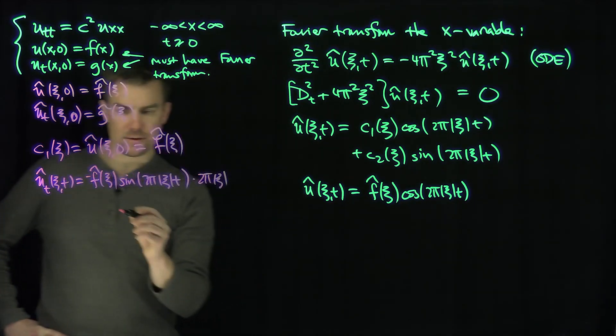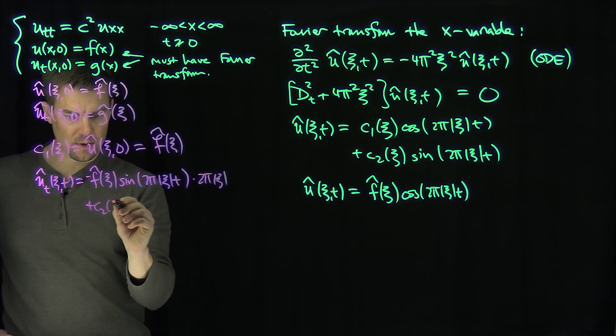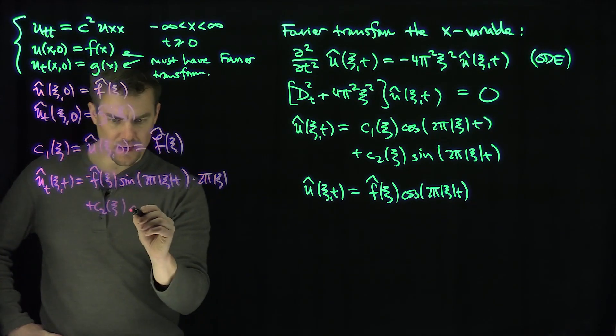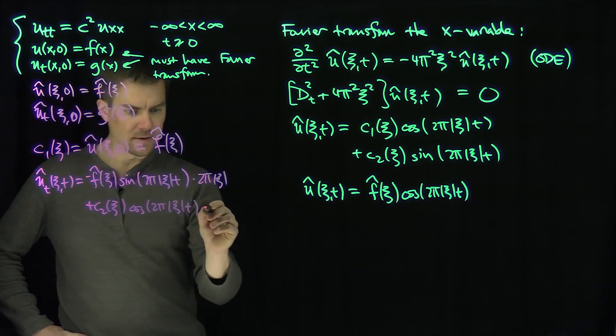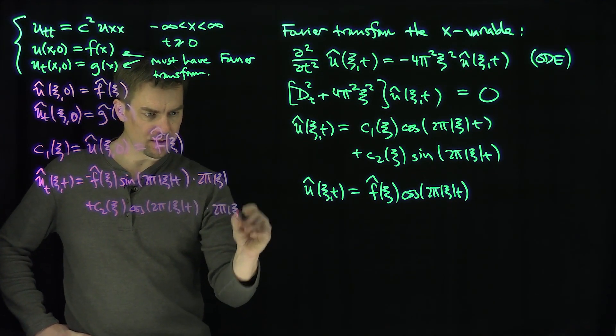And the derivative of sine is cosine, right? So that's going to be a plus c2 xc and then cosine of 2 pi modulus xc t times what? 2 pi xc. Like so.